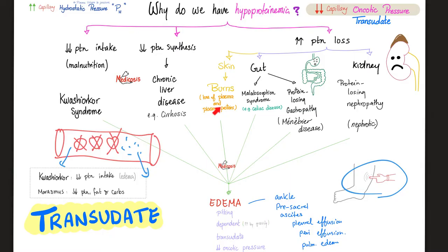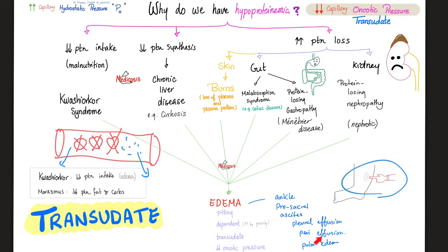With burns, everything oozes out through the burnt skin: plasma, plasma proteins, electrolytes, etc. Or proteins can be lost through the gut — protein-losing gastropathy, Ménétrier's disease, or protein-losing enteropathy such as malabsorption syndrome or celiac disease. Or through the kidney: protein-losing nephropathy, also known as nephrotic syndrome. Regardless of the cause, decreased proteins cause edema that is pitting, dependent, transudate, caused by decreased oncotic pressure — ankle edema, presacral, ascites, pleural effusion, pericardial effusion, or pulmonary edema.